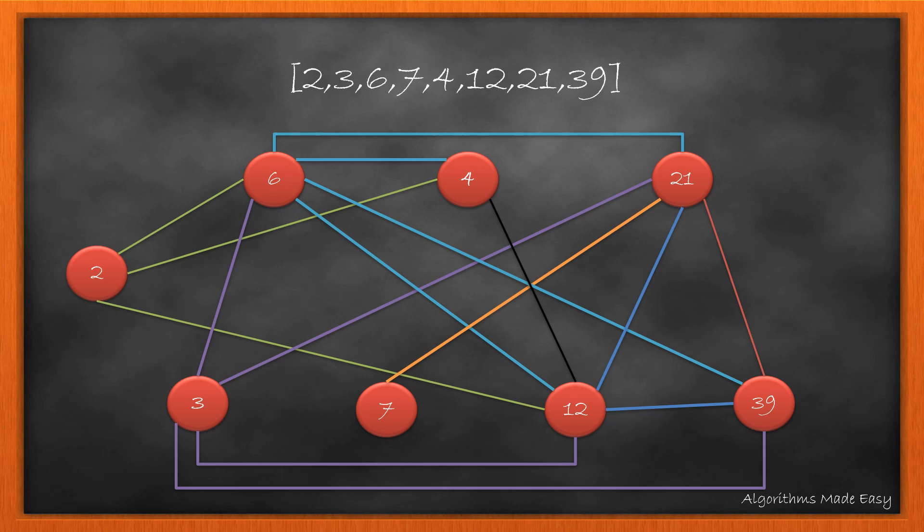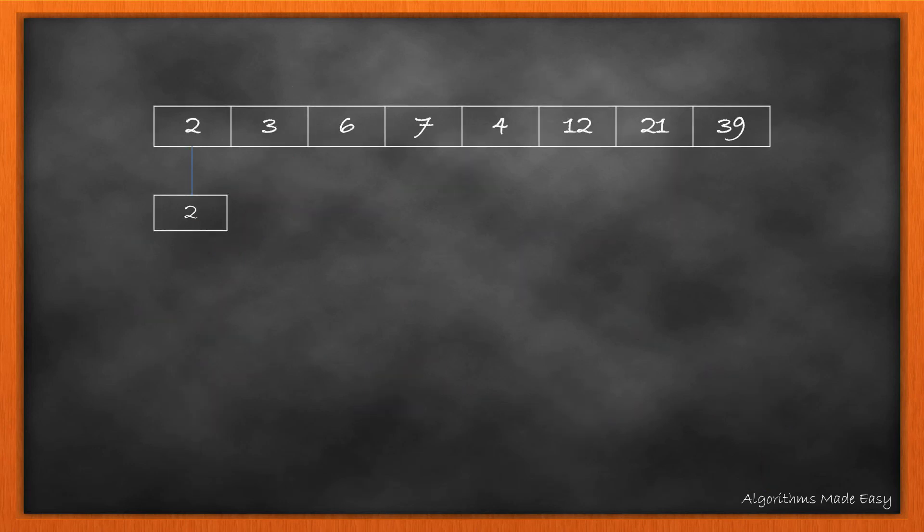Well, it looks messy and as the number of elements grow, it becomes more and more difficult to visualize. Let's break this process down. We'll start by writing all the prime factors for all the numbers. Now starting with 2, we see that it just has 2 as its prime factor.